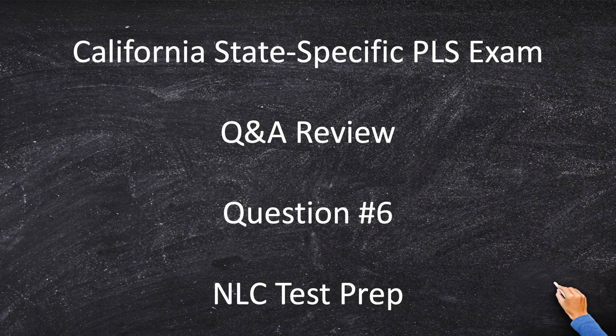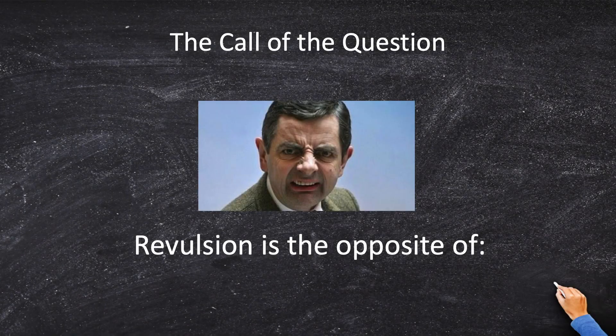Welcome to Fundamentals of Surveying Q&A Review, question number six. If there are two things I love most: number one is water boundary processes like revulsion and accretion — all that good stuff — and number two is a funny movie. I've never seen someone more revulsed than Mr. Bean; I don't know what he was looking at, probably his boss M, or whoever her name was — Moneypenny — but he doesn't look very pleased.